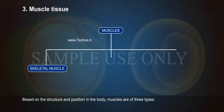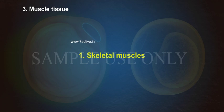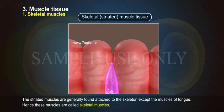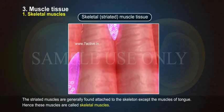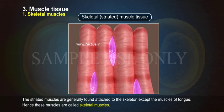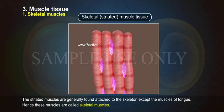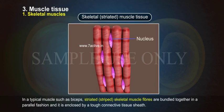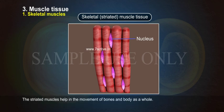Skeletal muscles: The striated muscles are generally found attached to the skeleton, except the muscles of the tongue. Hence, these muscles are called skeletal muscles. In a typical muscle such as biceps, striated or striped skeletal muscle fibers are bundled together in a parallel fashion and enclosed by a tough connective tissue sheath. The skeletal muscles help in the movement of bones and the body as a whole.